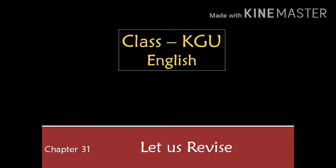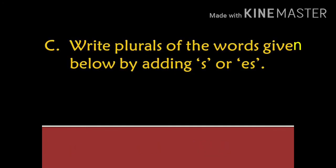Hello students, this is the sixth part of English chapter 31. Let us revise. Question: Write plurals of the words given below by adding S or ES. In the previous video, we have solved five words. In this video, we will start from number 6.